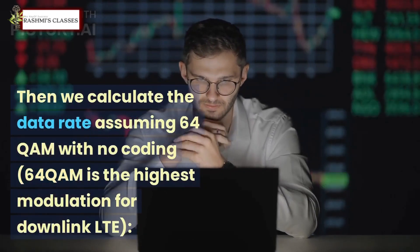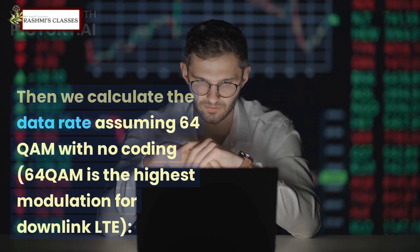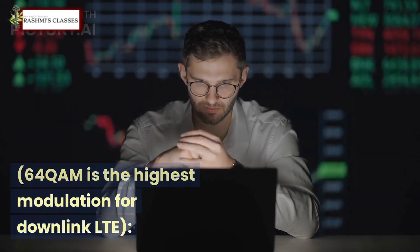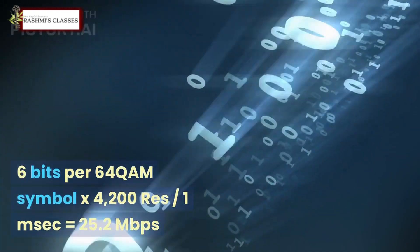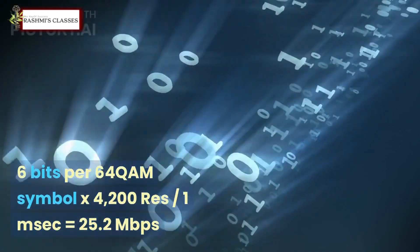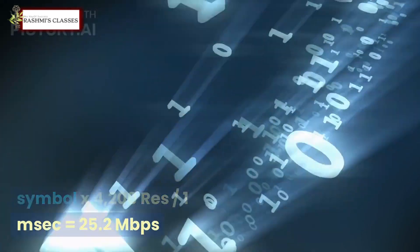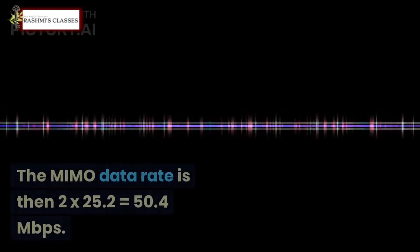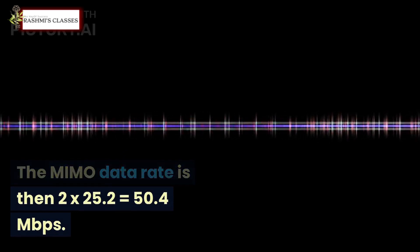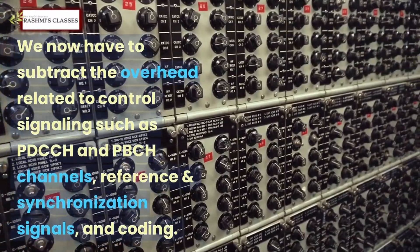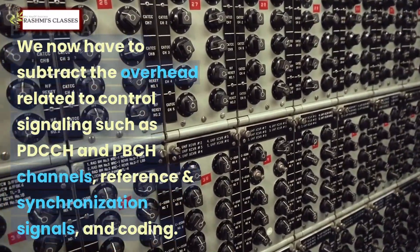Then we calculate the data rate assuming 64-QAM with no coding. 64-QAM is the highest modulation for downlink LTE. 6 bits per 64-QAM symbol x 4200 REs / 1 millisecond = 25.2 megabits per second. The MIMO data rate is then 2 x 25.2 = 50.4 megabits per second.